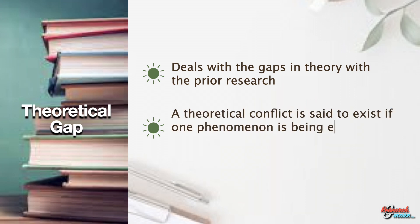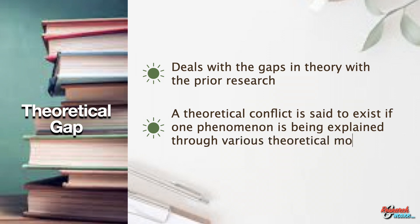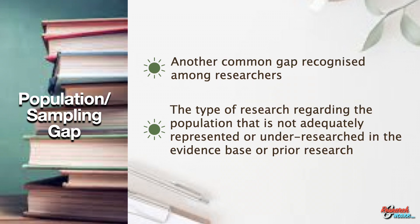Researchers could examine whether one of those theories is superior in terms of its explanatory capability. In research, there are always underserved populations that have been under-researched, making population or sampling gap popular among researchers. Some examples of this type of gap are gender, race or ethnicity, age, and other types of demography.